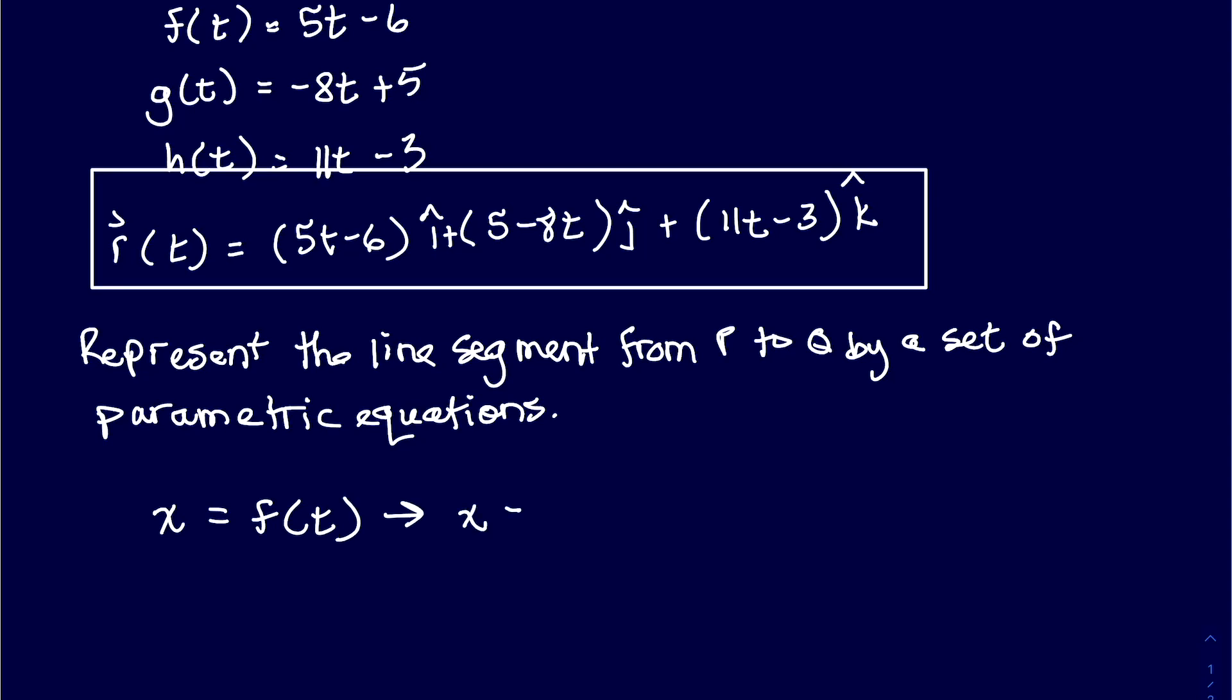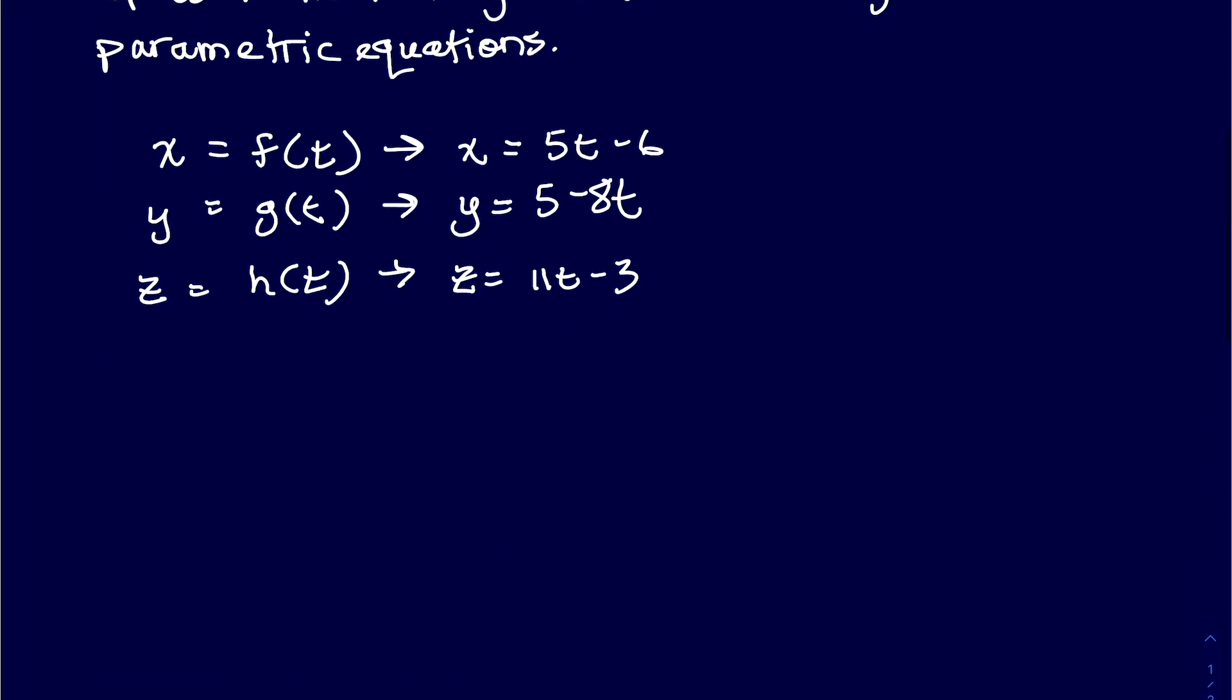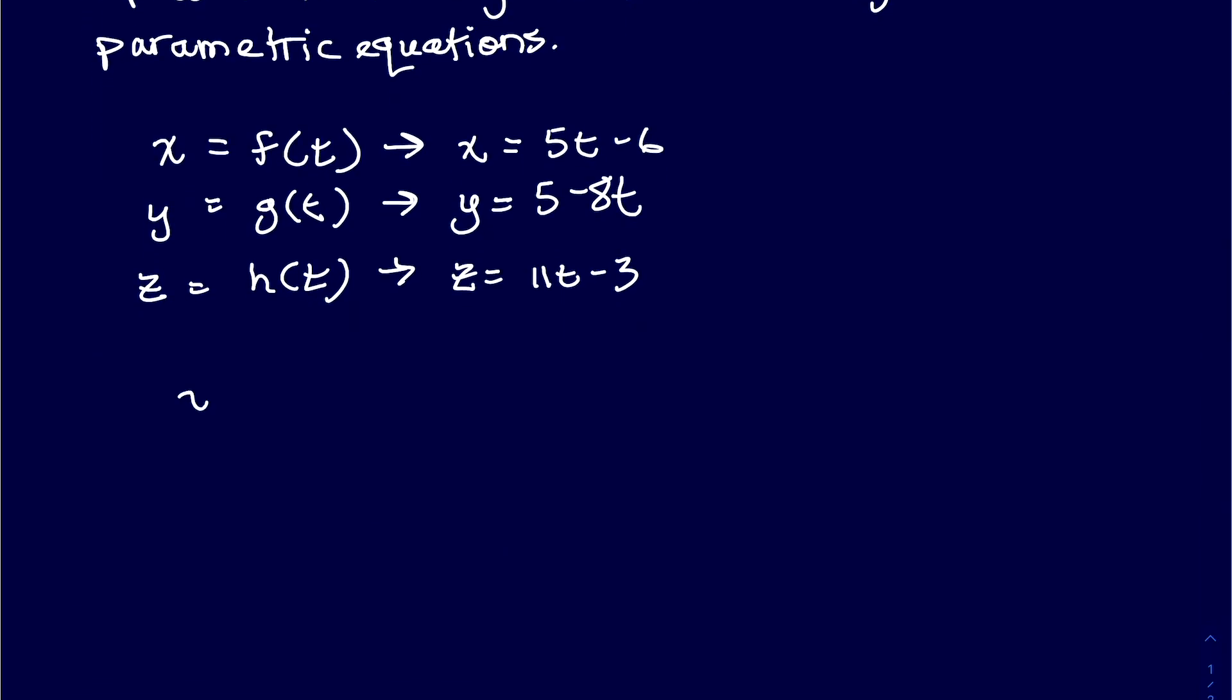y is equal to g(t), so that would be y is equal to 5 - 8t. And then z is equal to h(t), and so we would get z is equal to 11t - 3. And putting it together, we'll have x = 5t - 6, y = 5 - 8t, and z = 11t - 3.